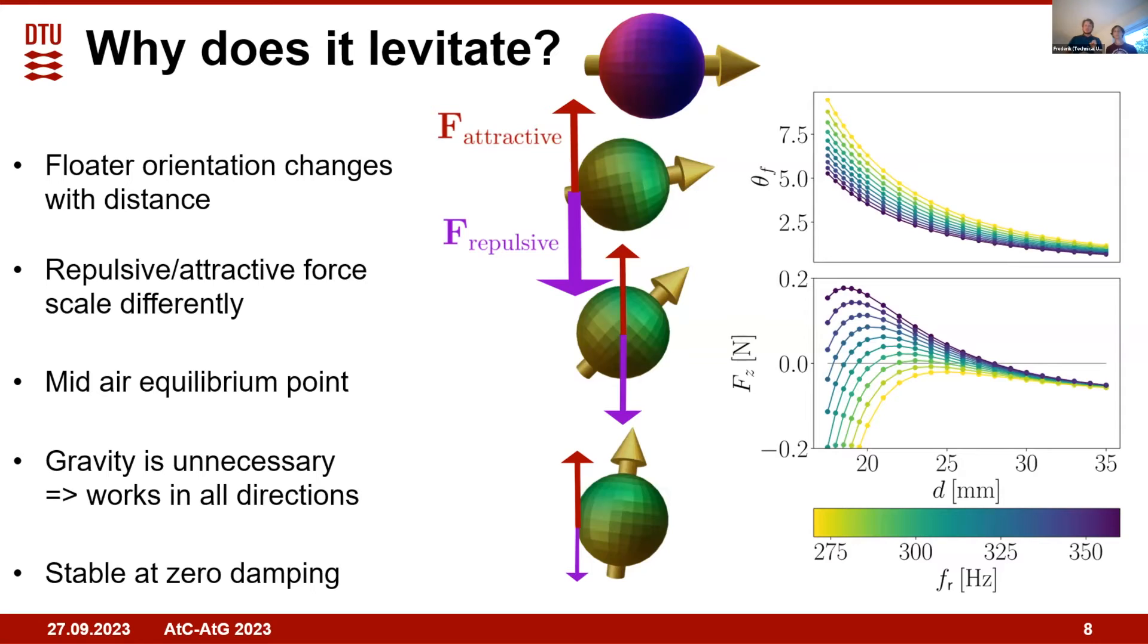This explanation does not require gravity at all, which is why the phenomenon works in all directions. When we reach steady state in the simulations then turn off damping, it remains stable. Damping makes it easier to reach from rest but it is not strictly required. All we need is the magnetic interaction and gyroscopic stability from the rotation and inertia of the floater.